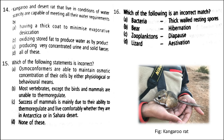Next: kangaroo and desert rat, which live in conditions of water scarcity, meet their water requirements by A. having a thick coat to minimize evaporative desiccation, B. oxidizing stored fat to produce water as a byproduct, C. producing very concentrated urine and solid feces, D. all of these. The correct answer is option D. Kangaroo and desert rats seldom drink water. They have a thick coat to minimize evaporative desiccation, seldom come out of their comparatively cool and humid burrow during daytime. 90% of water requirement comes from metabolic water produced by respiratory breakdown of fats, and 10% from food. Water loss is minimized by producing nearly solid urine and feces.